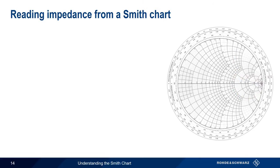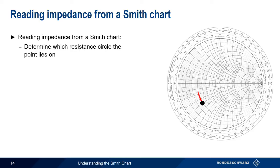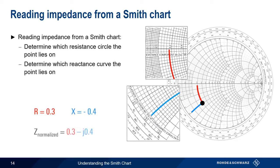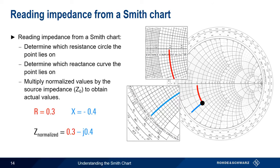We can reverse this procedure to read a complex impedance from a Smith Chart. We just determine which resistance circle our point lies on, then determine which reactance curve we're on. Once we have these values, we simply multiply by our source impedance, z sub 0, to obtain the actual value of our complex impedance.